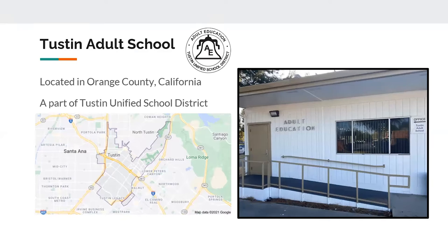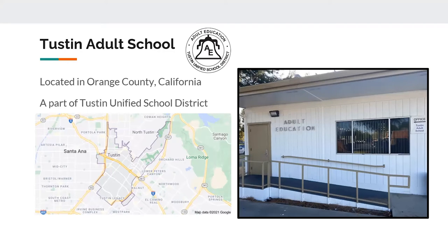Tustin Adult School is located in Orange County, California. Orange County is a small county but has quite a different range in who we serve. We're part of the South Orange County Regional Consortium, so we're the lower half of Orange County. Our surrounding cities are the city of Irvine and Santa Ana. To our north is unincorporated Santa Ana, as well as the city of Orange.